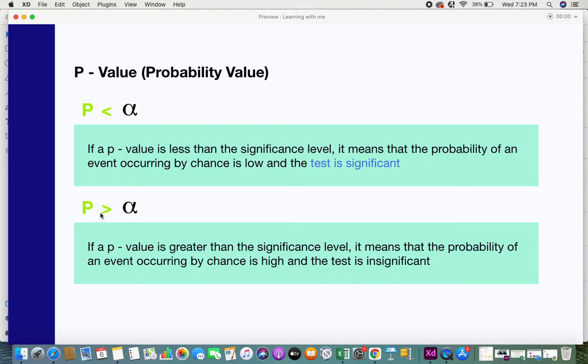Generally there are two rules here. If the p-value is less than alpha, then it means that the probability of an event or any result occurring is less. Since the probability of events happening by chance is less, therefore the test is significant.